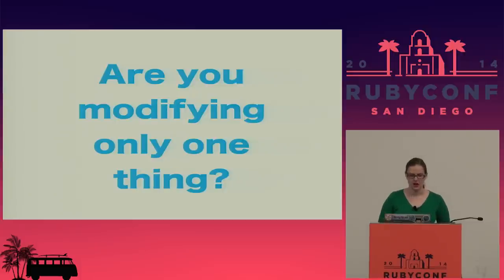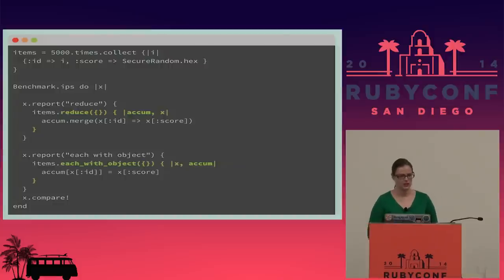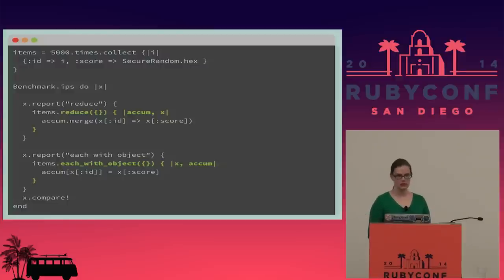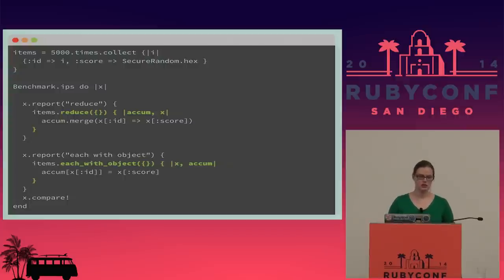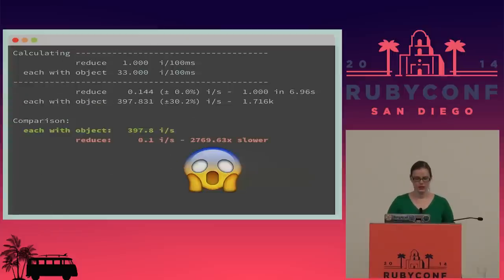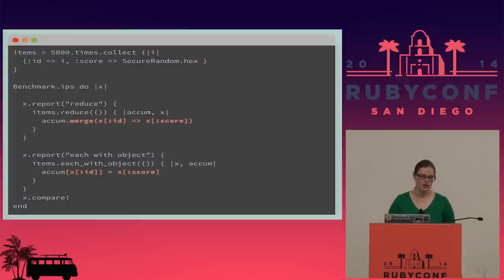The next question: are we modifying only one thing? Here we're going to write a benchmark to compare `reduce` and `each_with_object`. These two built-in methods do almost the exact same thing, except they accept their options in the opposite order, which is really confusing. We're taking an initial array with a bunch of hashes and effectively copying it over to a new one. When I run this IPS report, it's saying that `reduce` is almost 3,000 times slower than `each_with_object`. How could this possibly be the case?